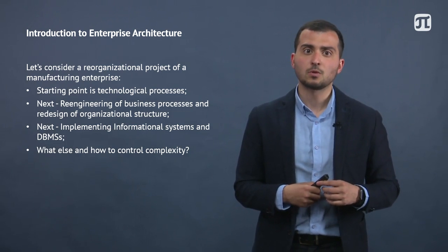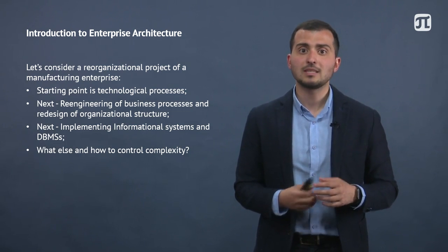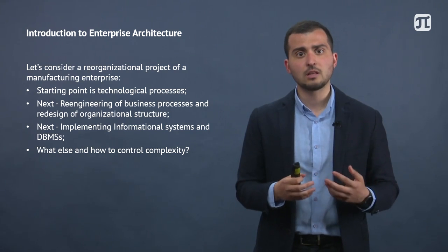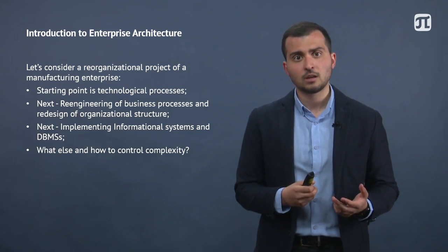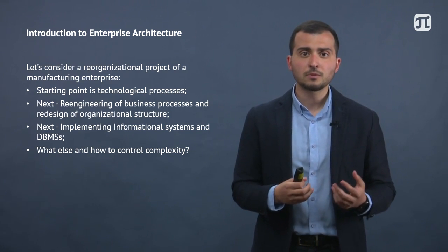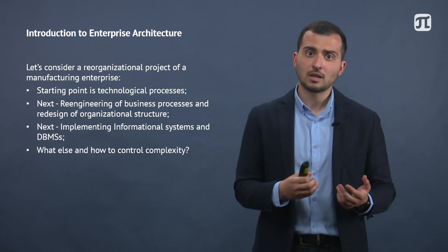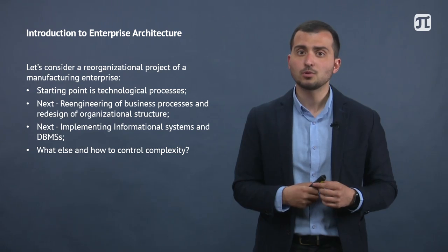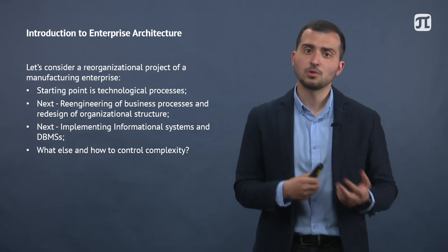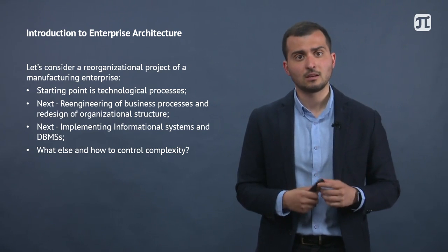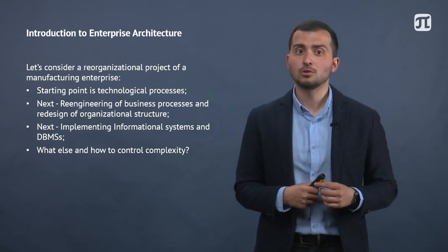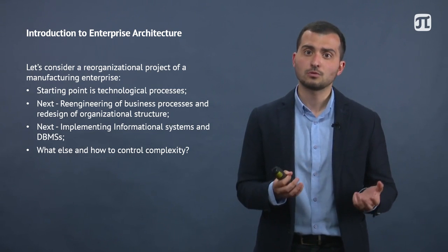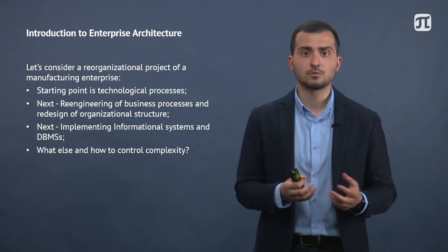Business process re-engineering is normally linked to a redesign of the organizational structure of the company, the departments' functionality and information flows. The processes' performance can also be digitalized with the implementation of information systems. We might have to implement new software or change the existing. Software changes might also lead to switching the database management system or even infrastructural changes in terms of hardware.